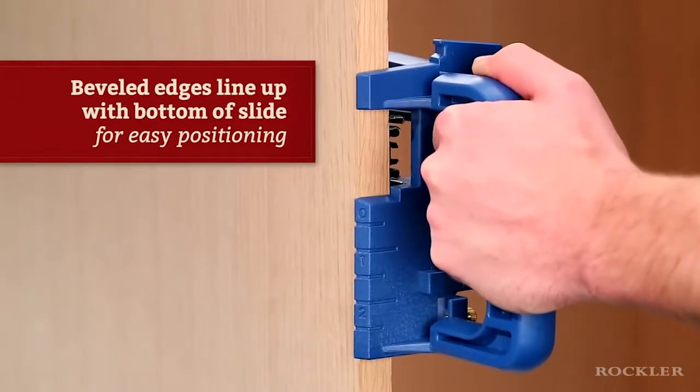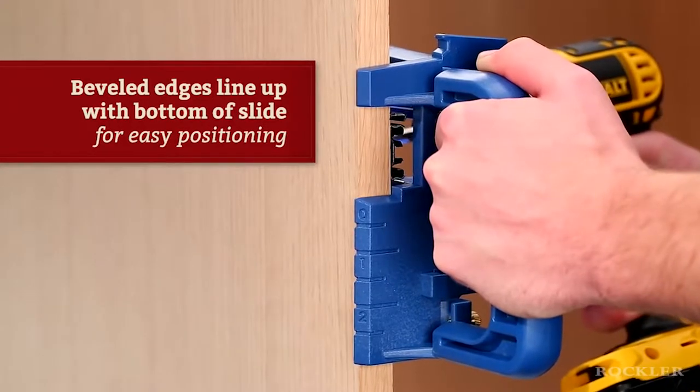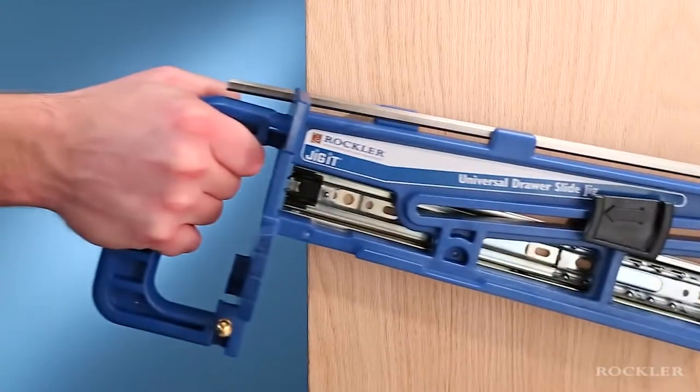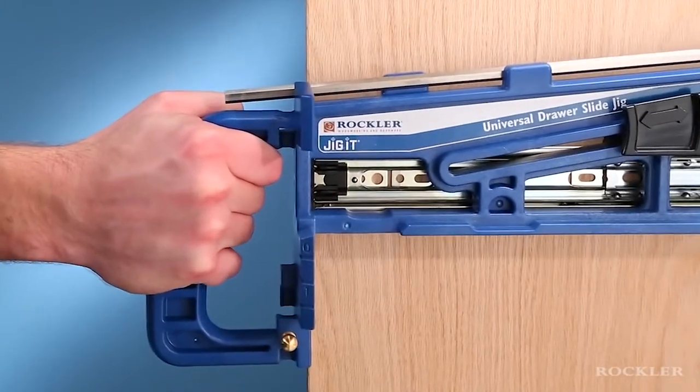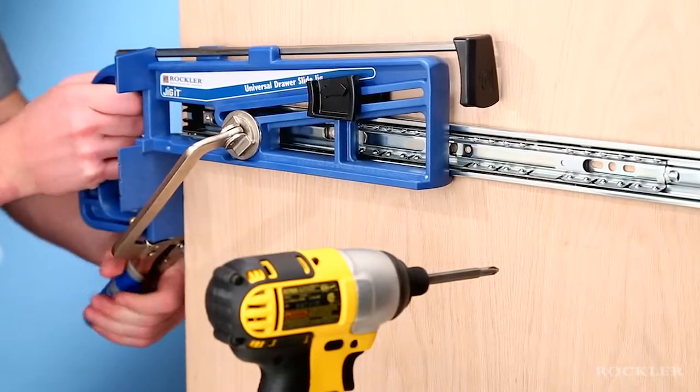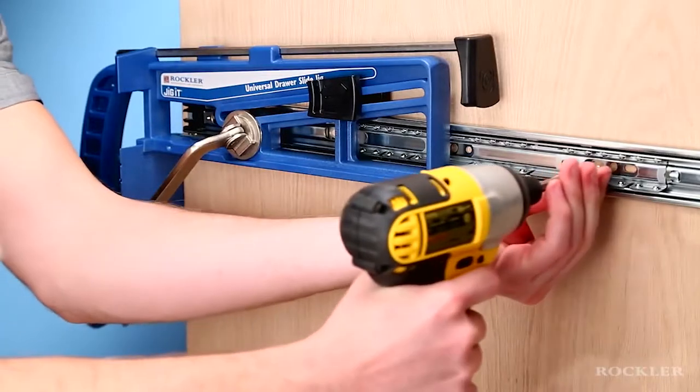Beveled edges on the jig's wings line up at the bottom of the slide for easy positioning at the cabinet, and there's a scale in case you need to offset the mounting height. The jig positions the slide square to the front of the cabinet and level from front to back. Flat areas on the body make it easy to clamp it to the cabinet if you want to free up both hands to drive the mounting screws.